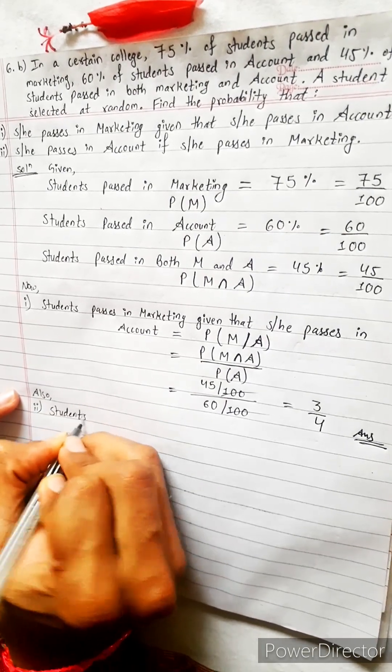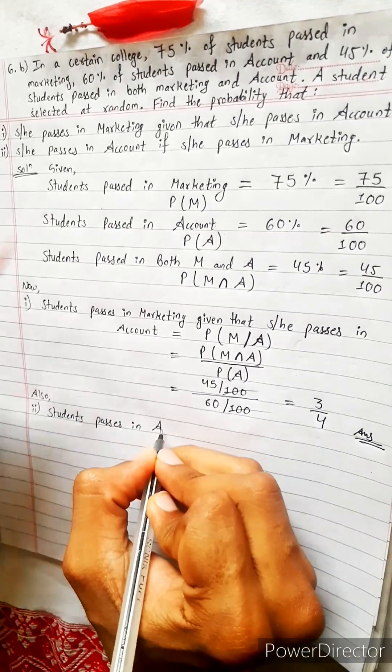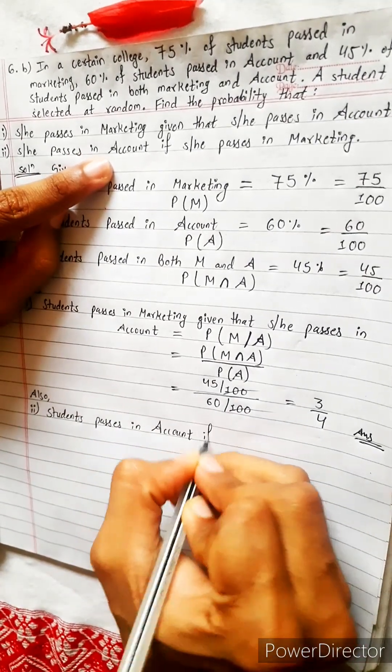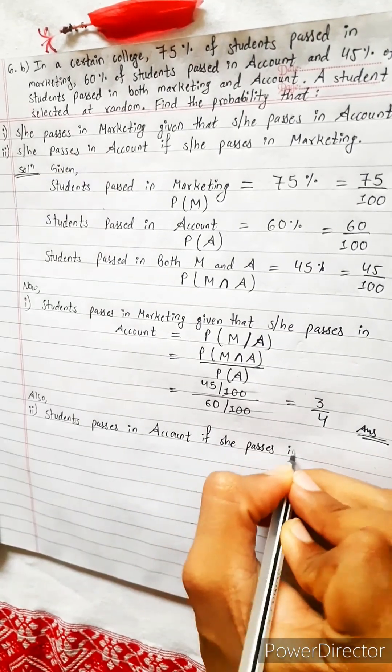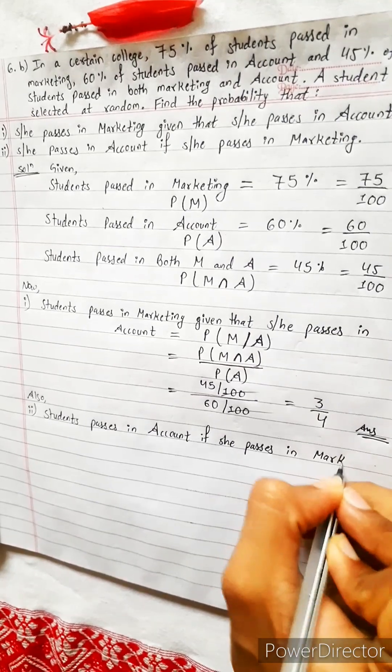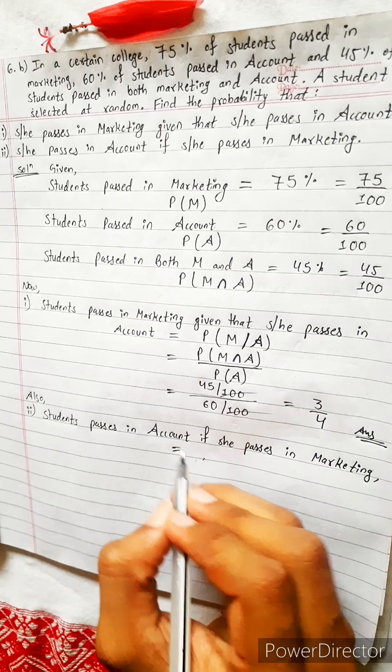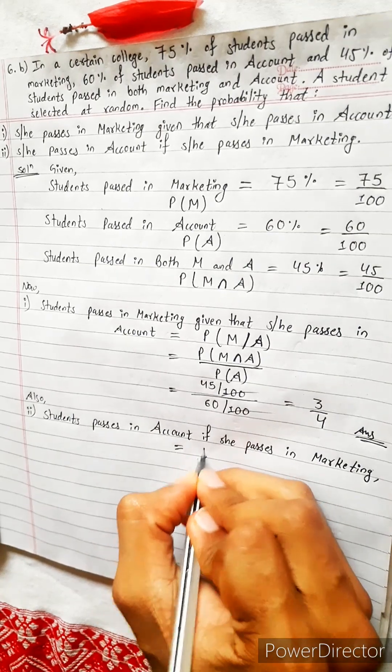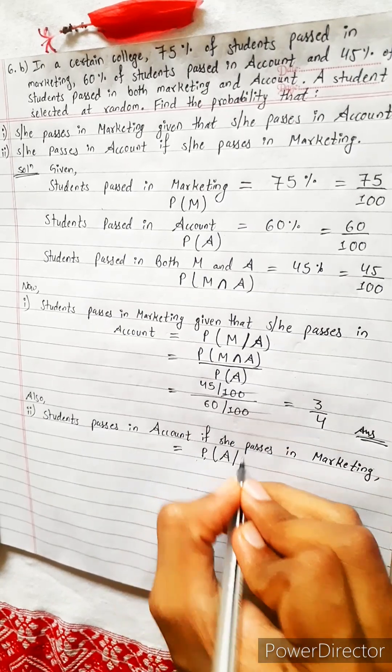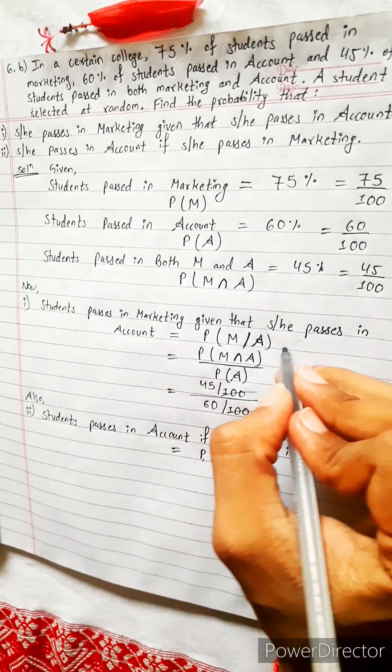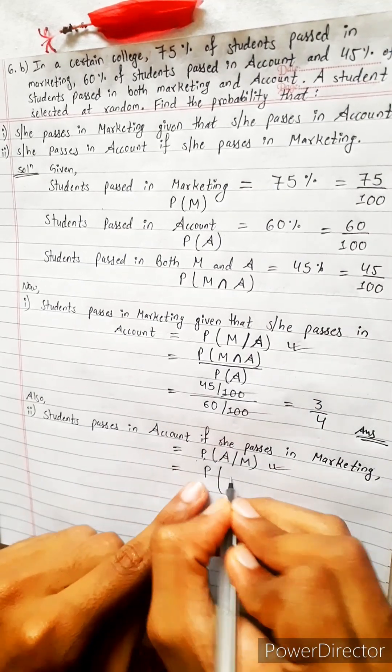Also for part two: students who pass in account if he passes in marketing. This equals - at first we have to write its mathematical representation. It is probability of, at first, passes in account and then passes in marketing. So this is A by M. Previously it was M by A, now it is A by M.